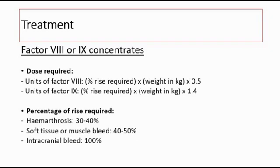For treatment, we can give factor VIII or IX concentrates, depending on whether it is hemophilia A or B. The dose required for the concentrates is calculated using a formula. For factor VIII: units = % of rise required × weight × 0.5. For factor IX: units = % of rise required × weight × 1.4.